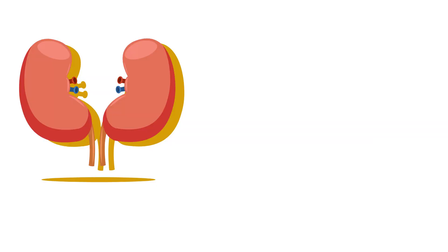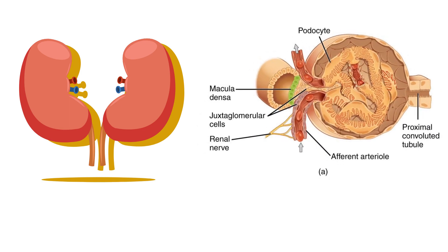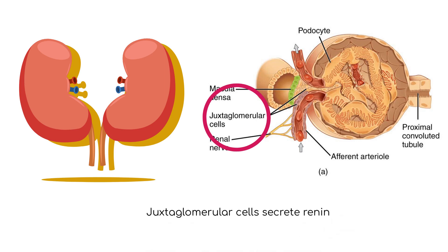There is an important structure in the nephron in the kidney called the juxtaglomerular apparatus, which contains juxtaglomerular cells that secrete an enzyme called renin. Renin is secreted into the blood in response to low blood pressure in the renal artery, as well as activation of the sympathetic nervous system and decreased sodium in the kidney tubules.